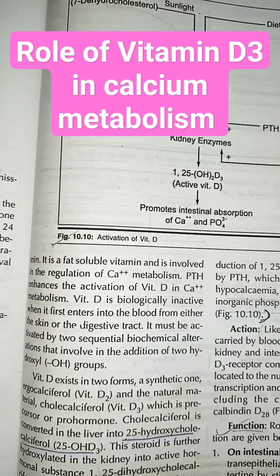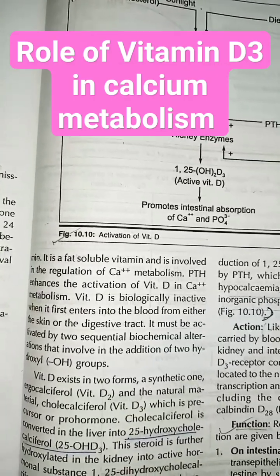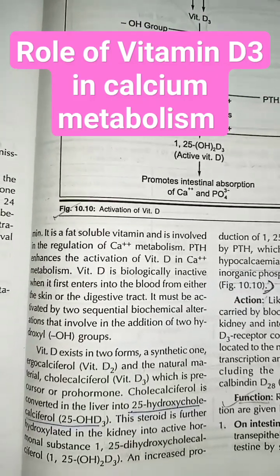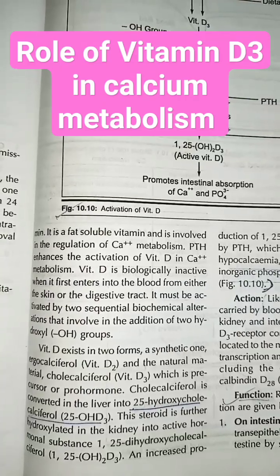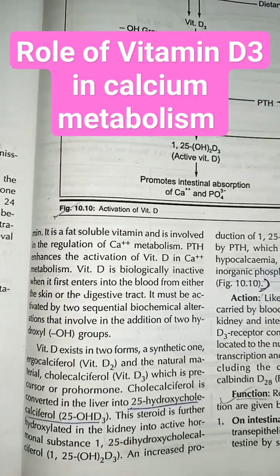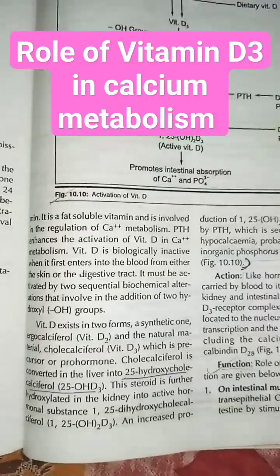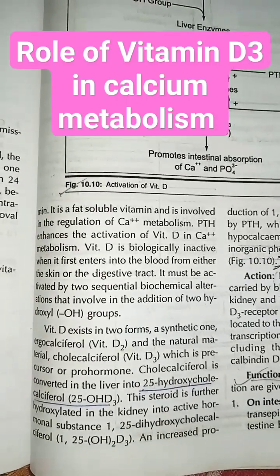Vitamin D must be activated by two sequential biochemical alterations that involve the addition of two hydroxyl groups. Vitamin D exists in two forms: a synthetic one, ergocalciferol (Vitamin D2), and the natural form, cholecalciferol (Vitamin D3), which is the precursor.